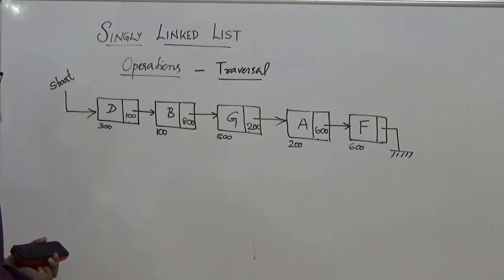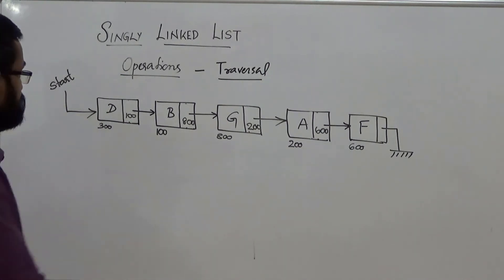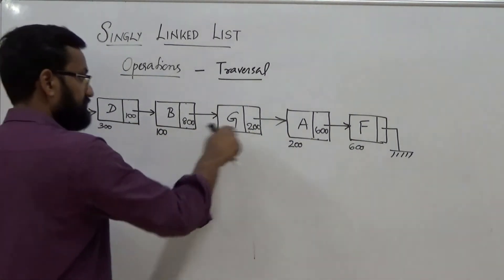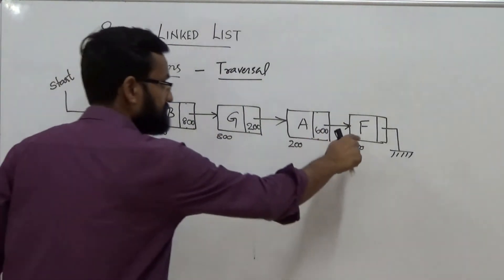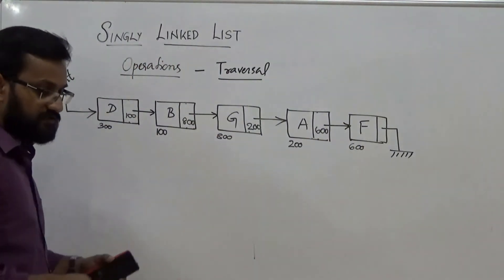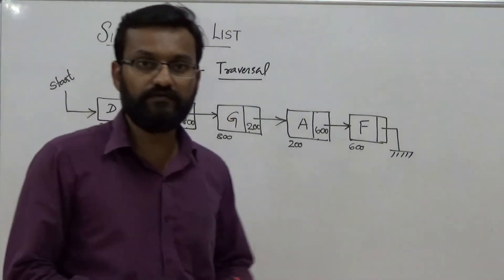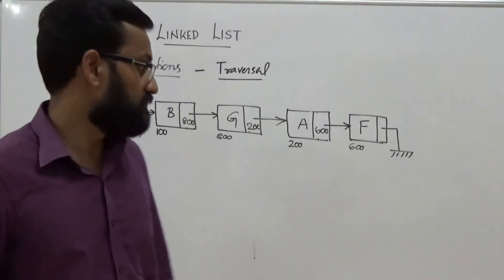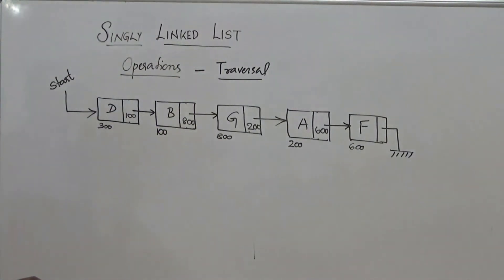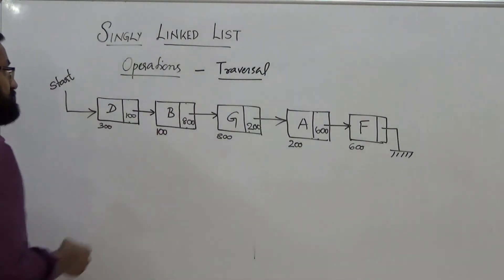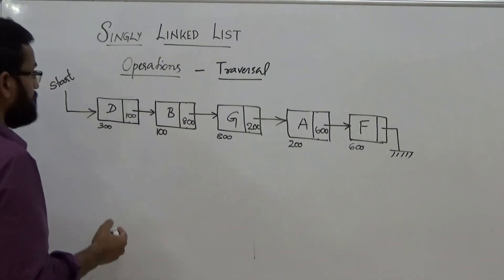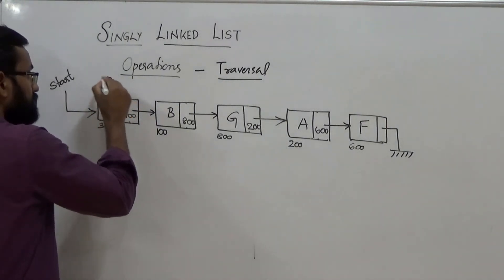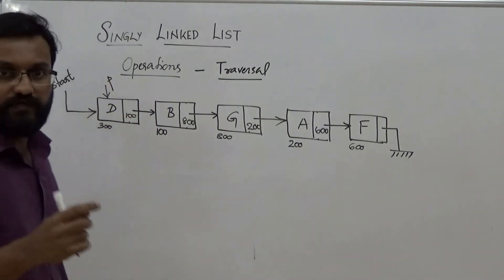So how can you perform traversal? Traversal means you need to visit each and every node starting from the first node and reach the last node. Our aim is to visit all the nodes and display the data part stored in each node. In order to perform traversal, you have to take a pointer — let the pointer be P — and make it point to the starting node.